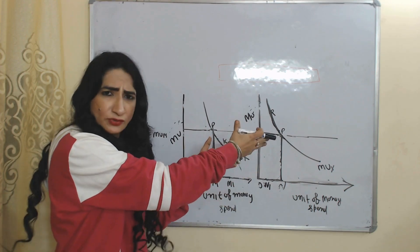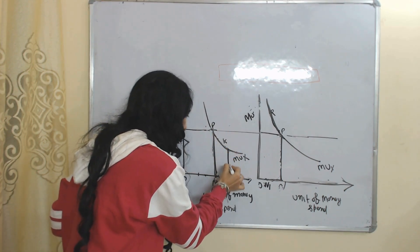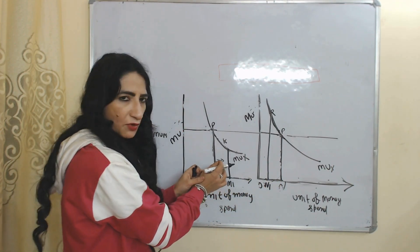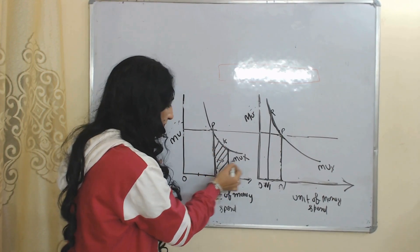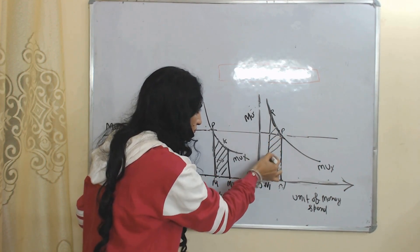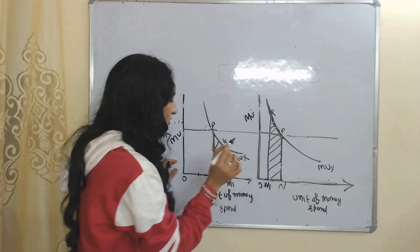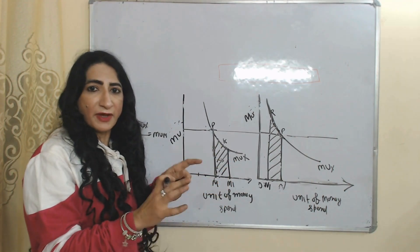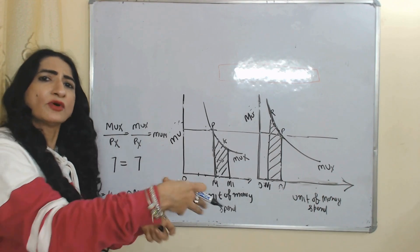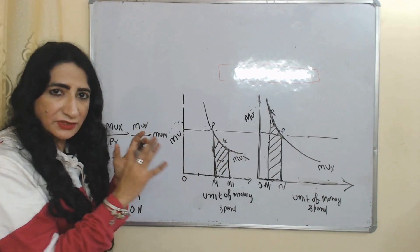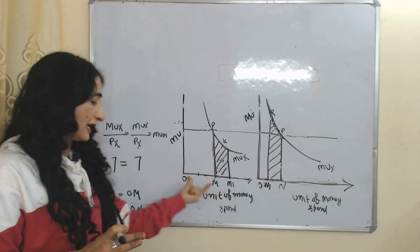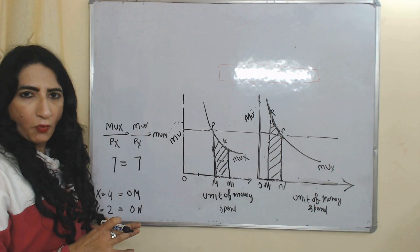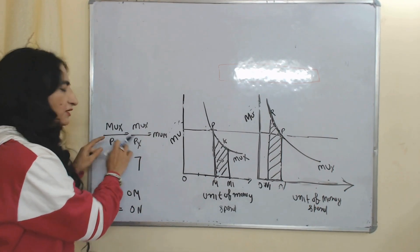Suppose the consumer does not choose this combination and diverts from equilibrium by increasing the quantity of X and reducing the quantity of Y. When the consumer increases the quantity of X, the gain equals a certain area, and when the consumer reduces the quantity of Y, the loss equals another area. When the consumer diverts from equilibrium, the loss is more than the gain. Therefore, diverting from this equilibrium point results in a net loss. The best combination is OM units of X (4 units) and ON units of Y (2 units), because at this point MUX/PX equals MUY/PY.